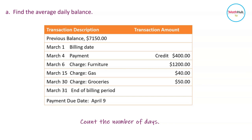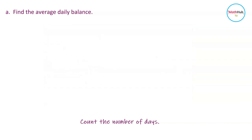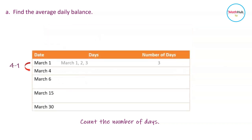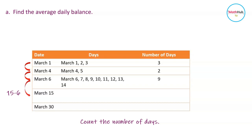Let's begin by computing the number of days for each unpaid balance. Between March 1st and March 4th we have 3 days. Then March 4th to March 6th is 2 days. March 6th to March 15th: 15 minus 6 is equal to 9, so we have 9 days. This represents the number of days for each new balance.